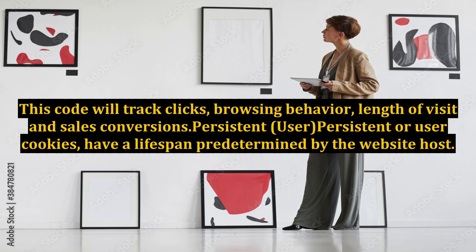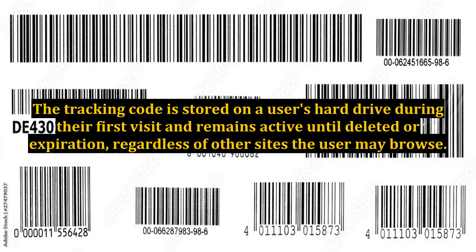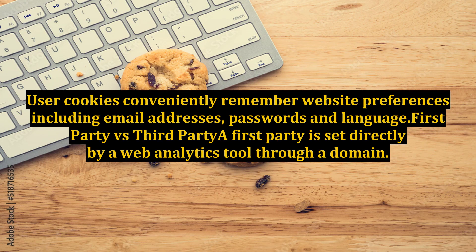Persistent or user cookies have a lifespan predetermined by the website host. The tracking code is stored on a user's hard drive during their first visit and remains active until deleted or expiration, regardless of other sites the user may browse. User cookies conveniently remember website preferences including email addresses, passwords, and language.